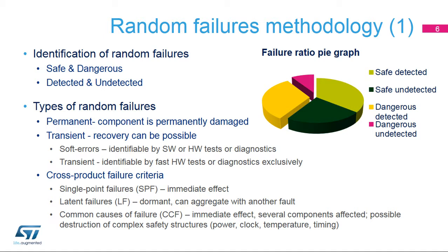In addition to being detected, failures can also be compensated in certain cases. Soft error failures can be managed by both hardware and software, while transient failures need fast hardware methods exclusively. Software tests can never compensate for these temporary and short-lived errors efficiently, as they are considerably slower and limited by their execution time. From a cross-product point of view, using ISO 26262 terminology, we can recognize single-point, latent, or common types of failure causes.